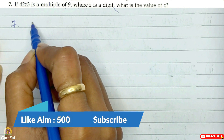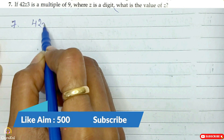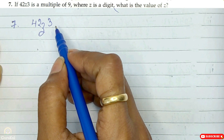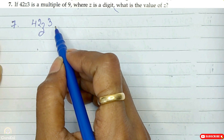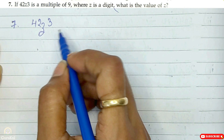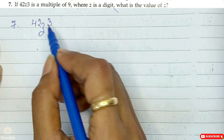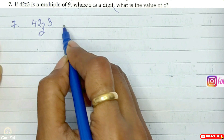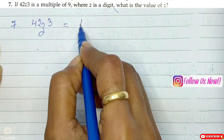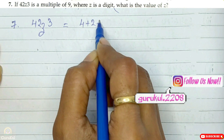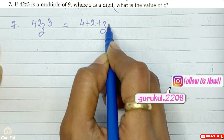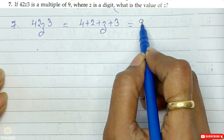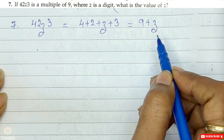The number is 4, 2, Z, 3 and it is a multiple of 9, where Z is a digit and we need to find the value of Z. So we apply the divisibility test: 4 plus 2 plus Z plus 3, which gives us 9 plus Z.